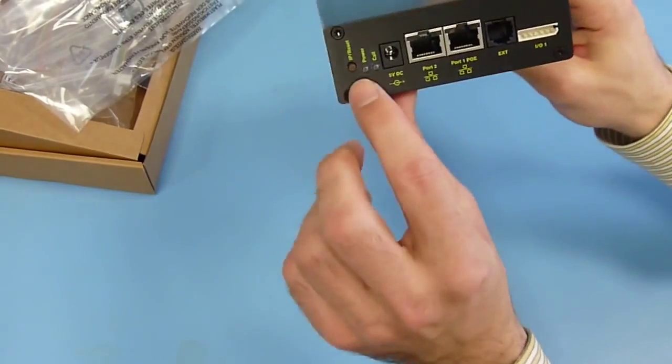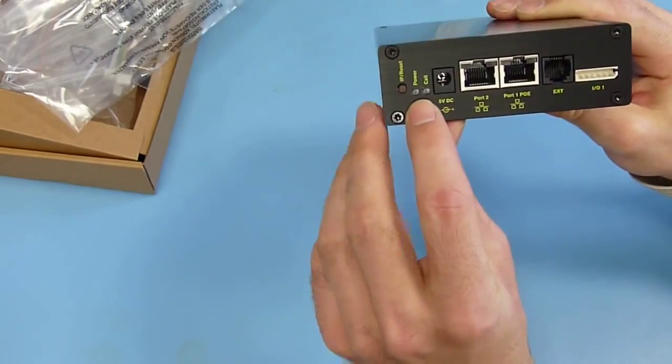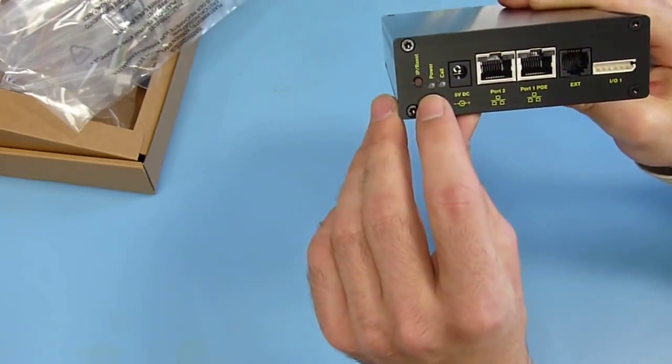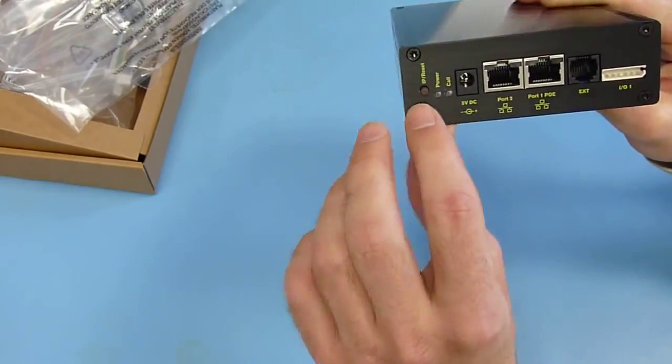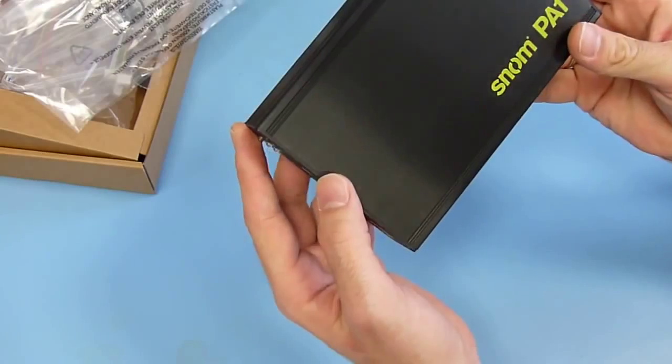What else do we have here? We have two status indicators, two LEDs. One red and one green one. Showing you the state for power or call. As we don't have any display here.